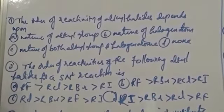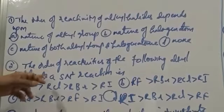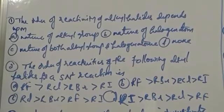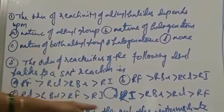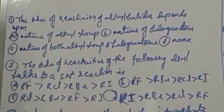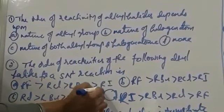The order of reactivity of the following alkyl halides for an SN2 reaction: among alkyl fluoride, chloride, bromide, and iodide, the order of reactivity for SN2 mechanism is — alkyl iodide > alkyl bromide > alkyl chloride > alkyl fluoride.